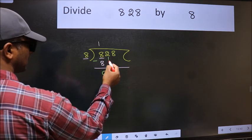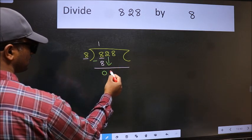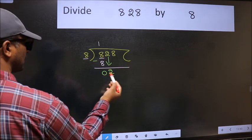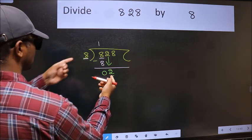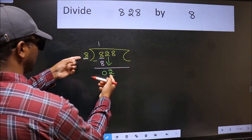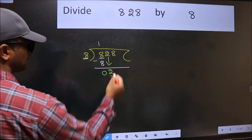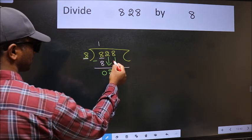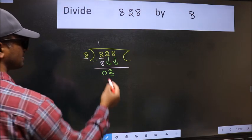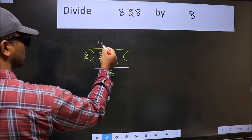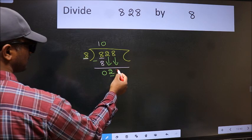After this, bring down the beside number 2. Now here we have 2 and here 8. 2 is smaller than 8, so we should bring down the second number. The rule to bring down the second number is we should put 0 here. Then only we can bring this number down.